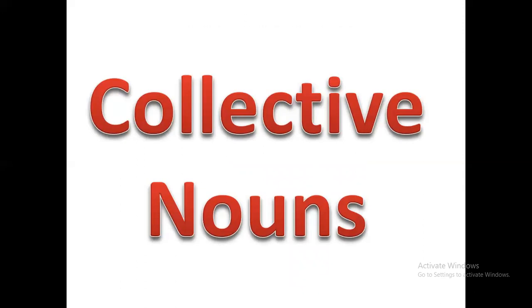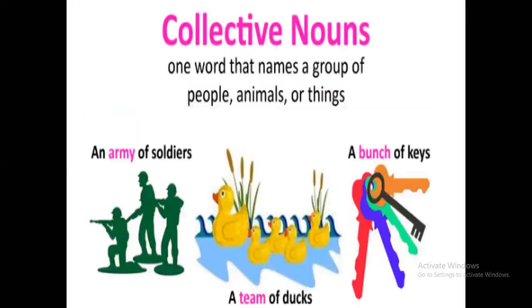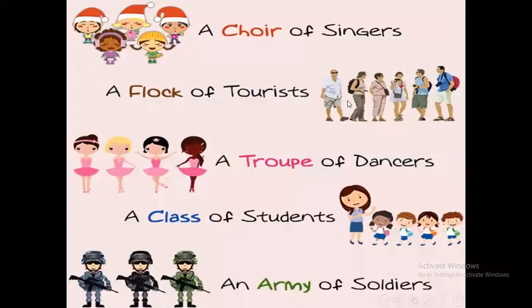Now let's talk about collective nouns. The collective noun names a group of things. It's only one word, but it refers to more than one thing, person, or animal. Like 'an army of soldiers' — the word army refers to more than one. 'A team of ducks' — the word team refers to a group of ducks. 'A bunch of keys' refers to more than one key. Also: a choir of singers, a flock of tourists, a group of dancers, a class of students, an army of soldiers.